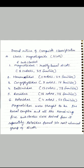Magnoliidae were thought to be the basal complex, and all the remaining five subclasses were derived from it separately according to Cronquist. Asteridae formed the most advanced group of dicots.